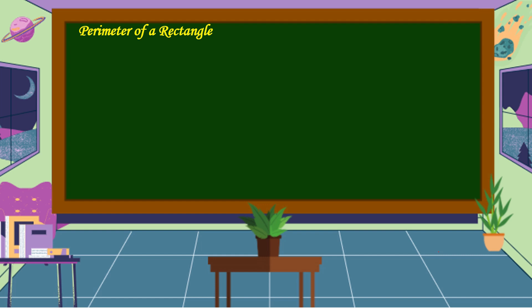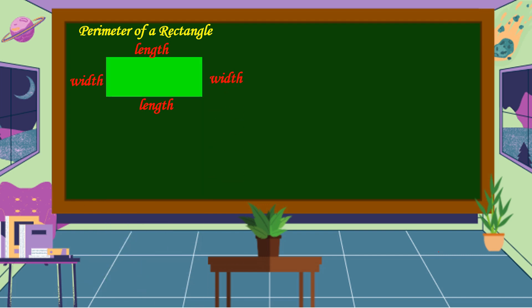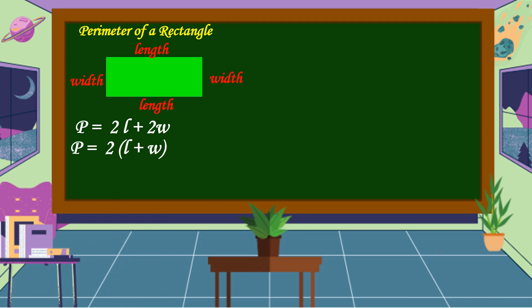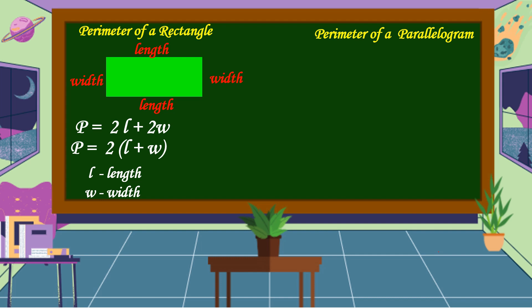Next is the perimeter of a rectangle. The formula for finding the perimeter of a rectangle is P = 2L + 2W, or P = 2 times the quantity length plus width, where L is the length and W is the width.